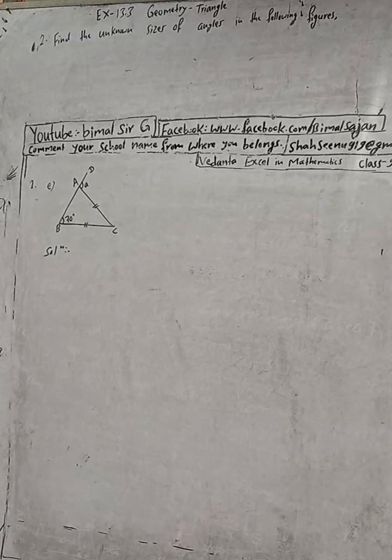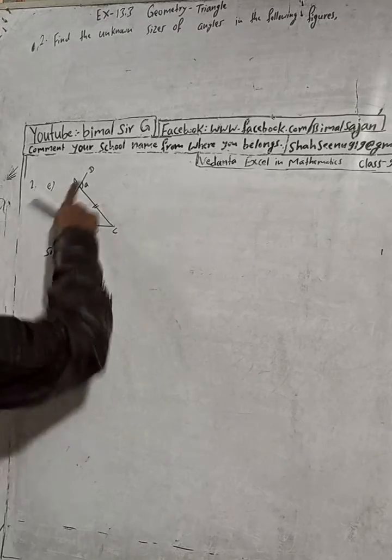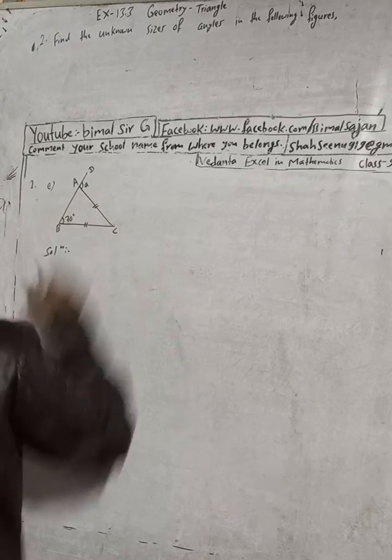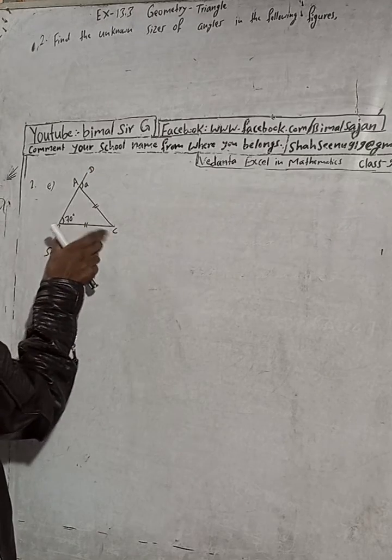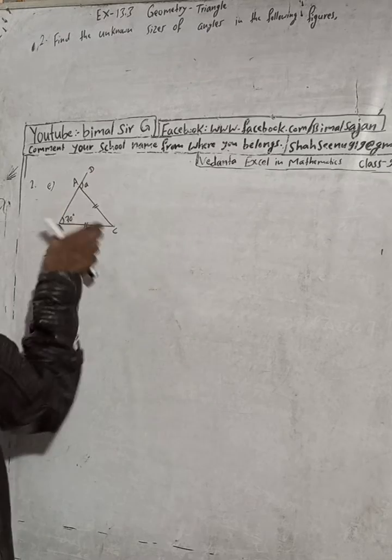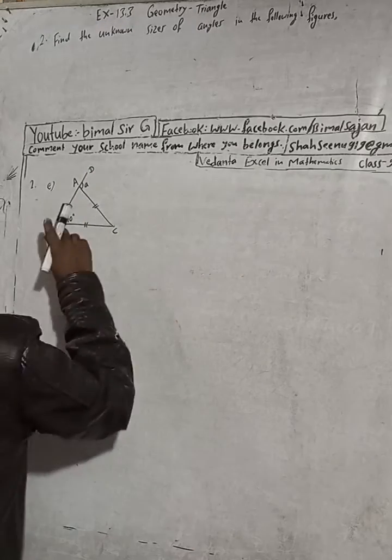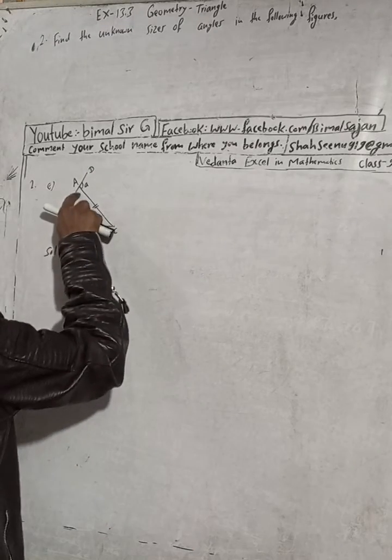This is question number 2a. Here you can see this is triangle ABC and this is the exterior angle. This side is given, so if two sides are equal, that means this is an isosceles triangle. That means base angles are equal—this is 70 and this is also 70.